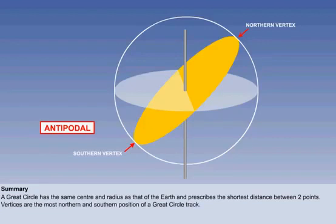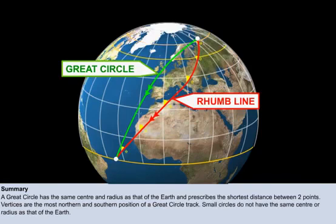Vertices are the most northern and southern positions of a great circle track. Small circles are circles on the surface of the Earth that do not have the same center or radius as that of the Earth.